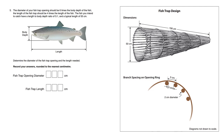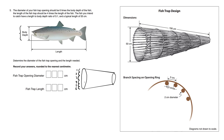The diameter of your fish trap opening should be six times the body depth of the fish. We're talking about the body depth of the fish being like this. Look at this picture here — six fish depths would fit into the diameter of this circle.